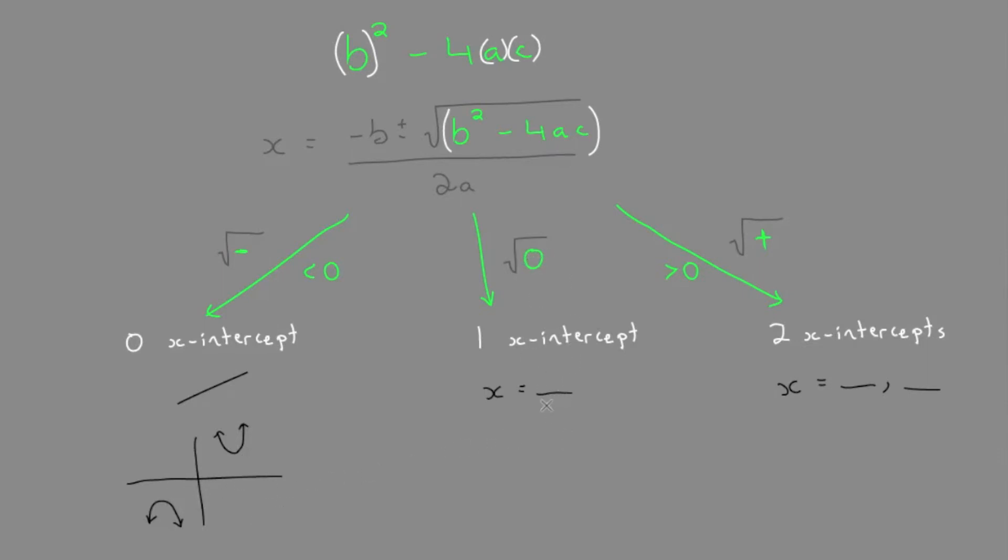When the discriminant is equal to zero, when it equals zero, and we have one x-intercept, what does that look like? Well, for example, if we had a root on the x-axis, so let's say this is zero, four. The vertex is at zero, four.